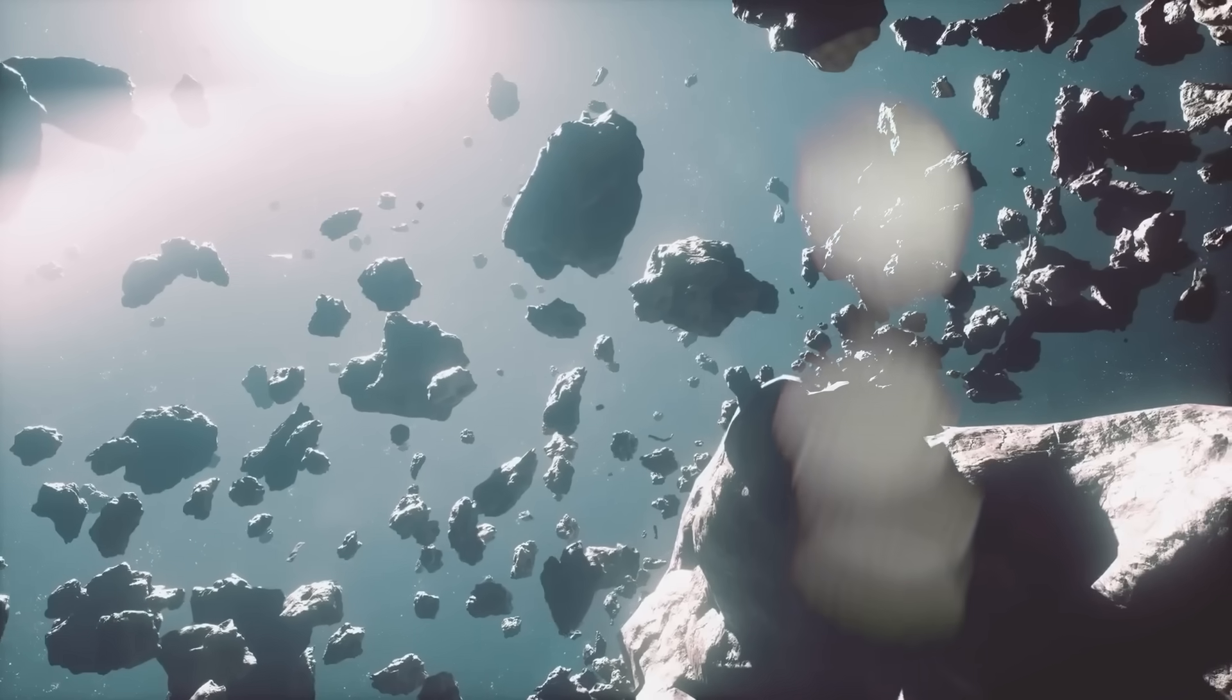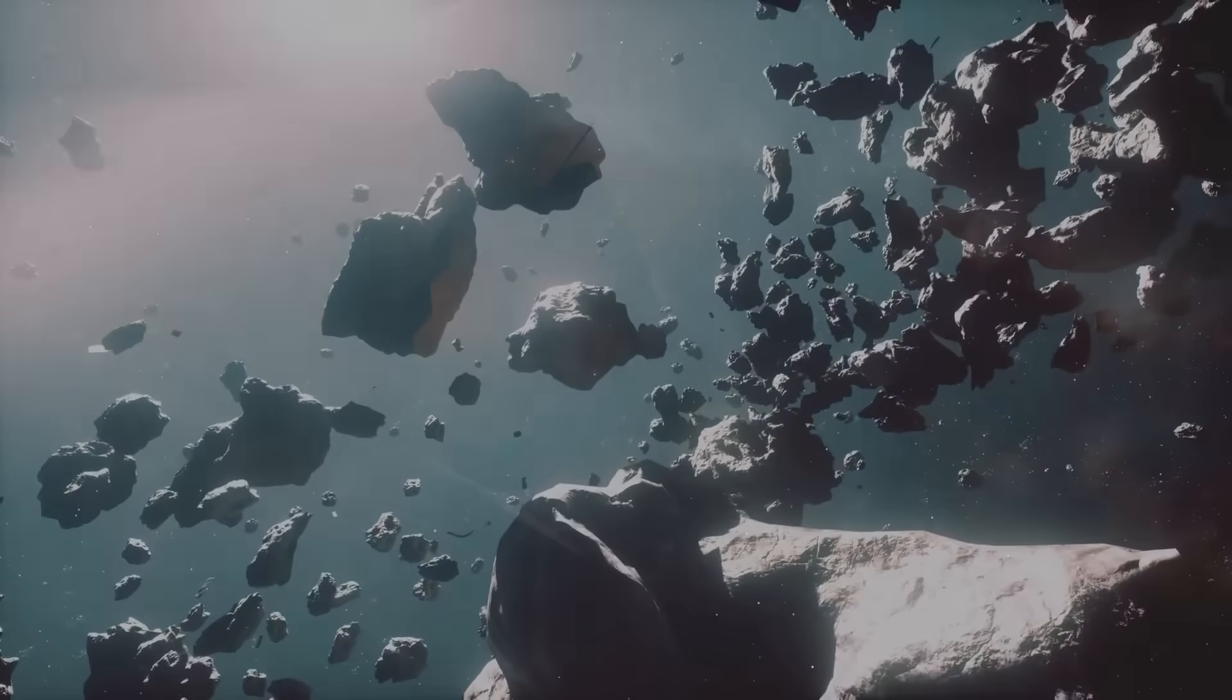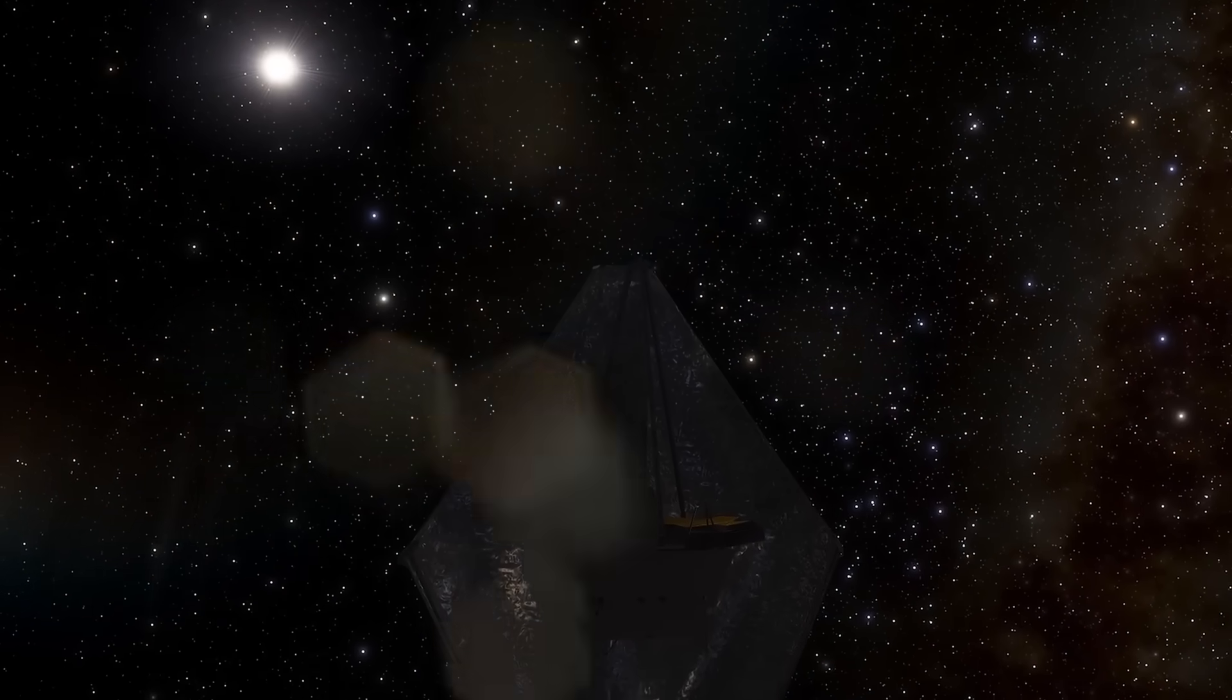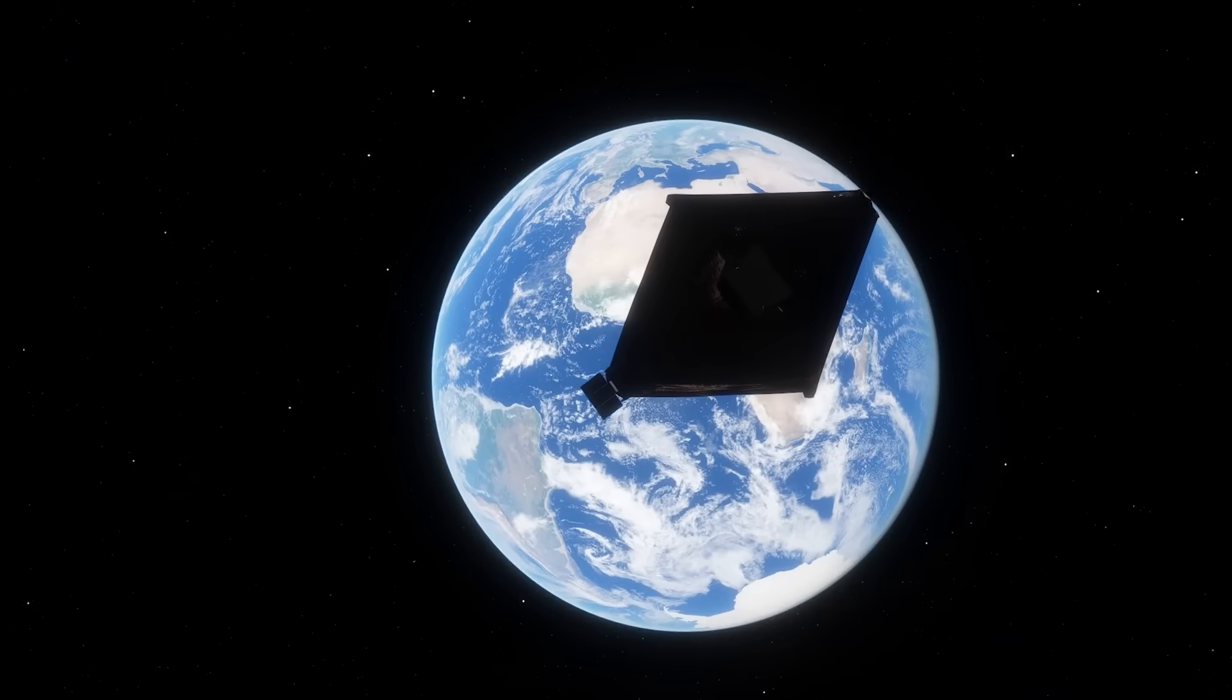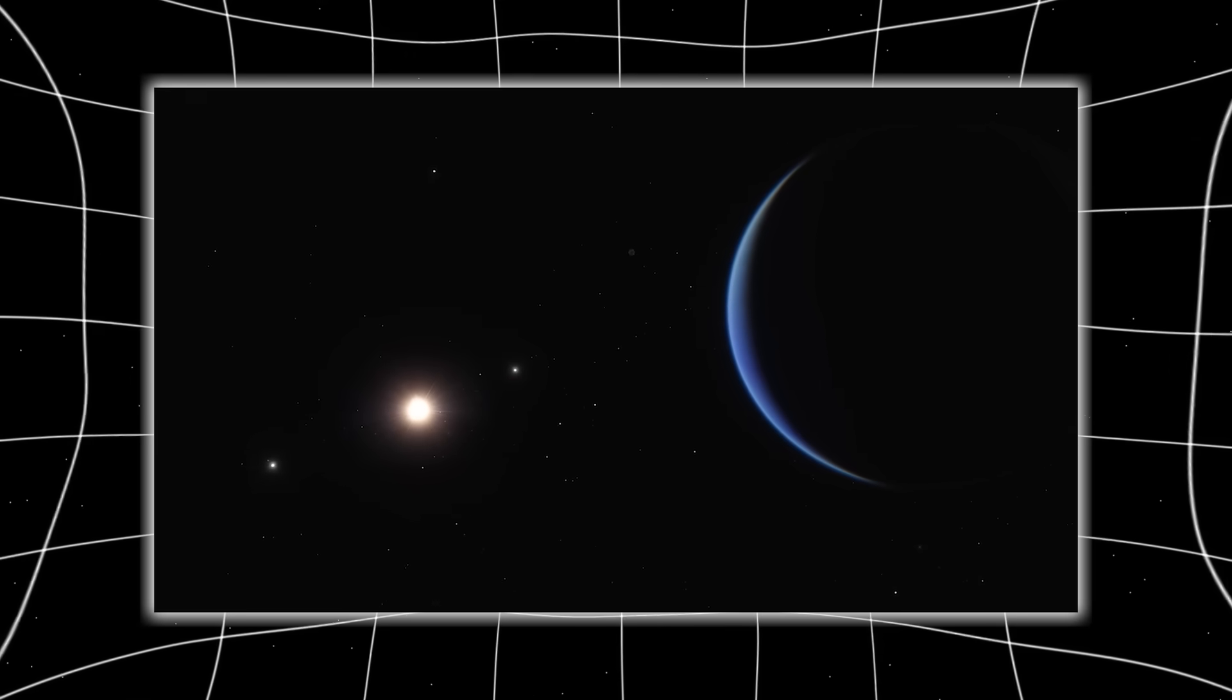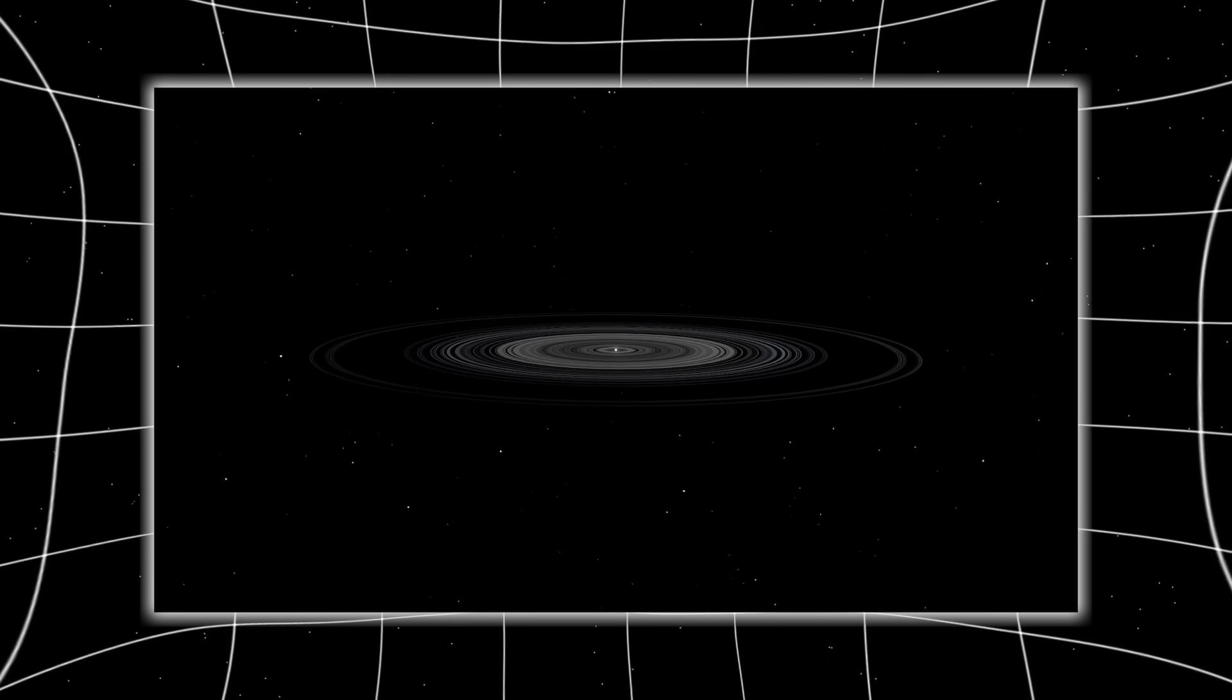After the initial confirmation, scientists around the world scrambled to get time on the most powerful space observatory ever built—the James Webb Space Telescope. Designed to peer deeper into time and space than anything before it, Webb was now focused on something much closer and potentially much more unsettling. The object's brightness didn't match its apparent size. Based on the intensity of the light it reflected, it should have been massive. But measurements suggested something smaller, which means the surface isn't behaving like rock or ice—it's behaving like metal, highly reflective, cold, possibly hollow.